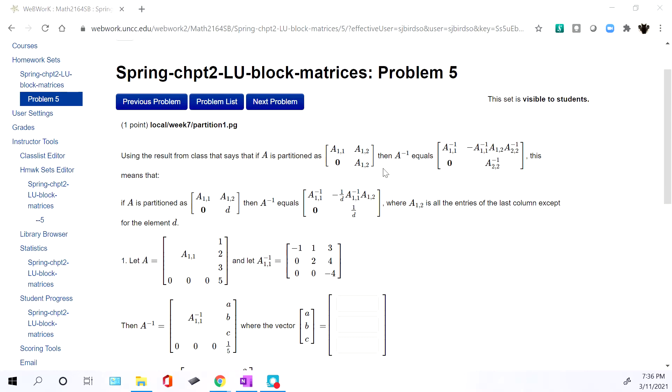This actually is a typo right here. That should be subscript two two. And then in the part that is the block that's not one of the diagonal blocks, you're going to multiply the two inverses that you got on the diagonal. And then in the middle, you'll have the original block that was in that location and then flip the signs. That's the formula.